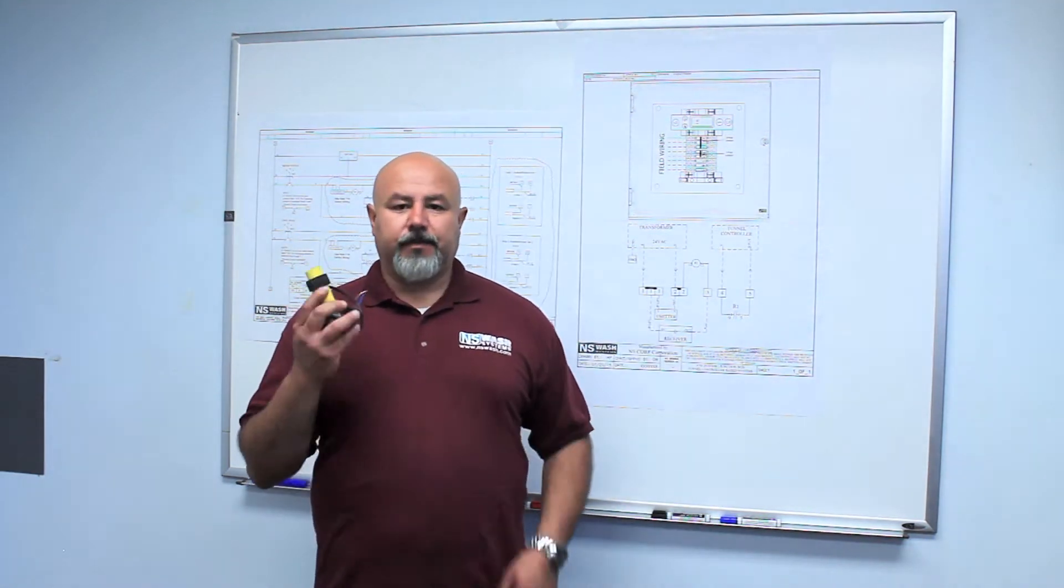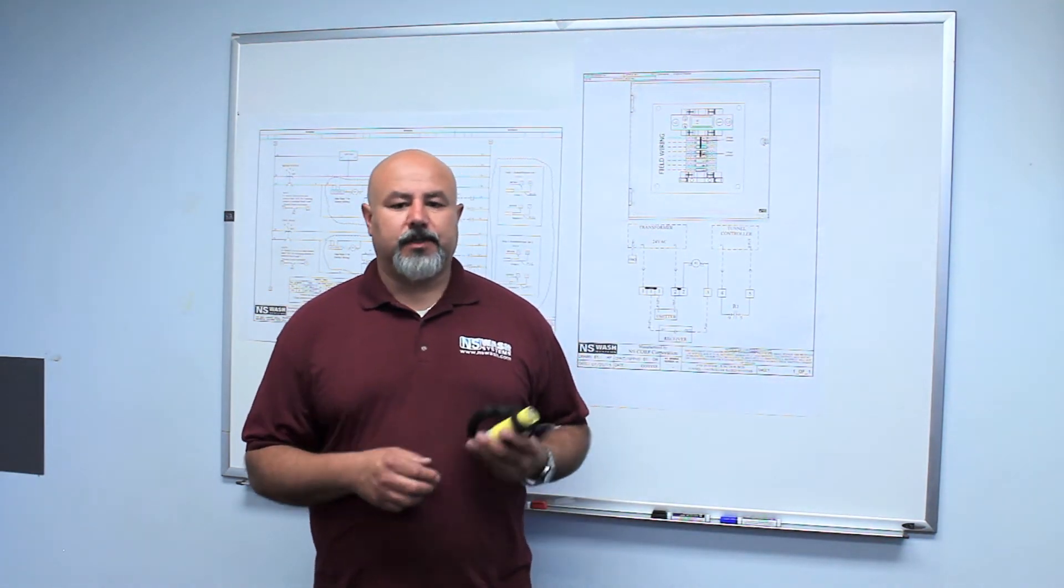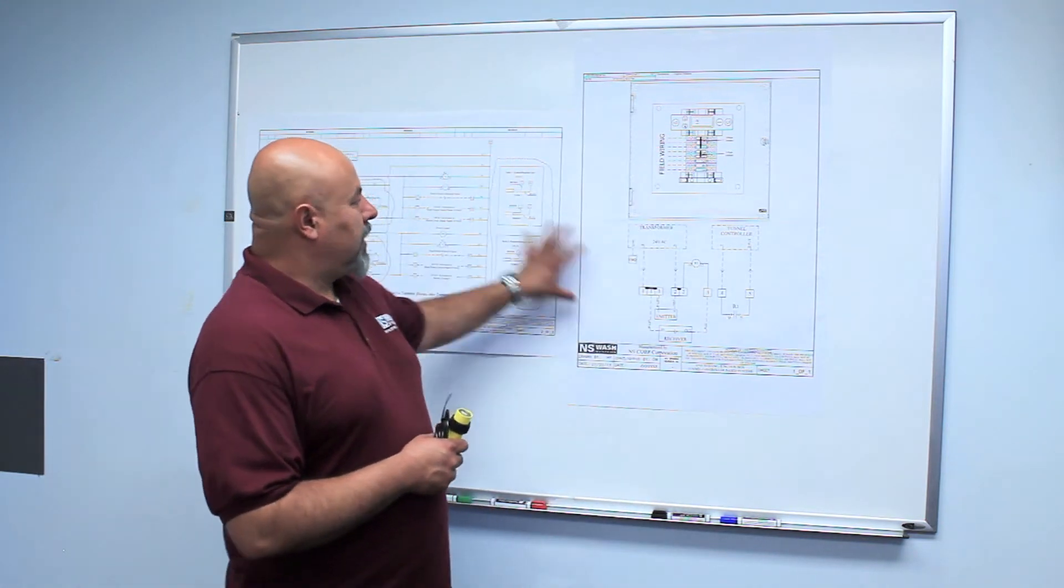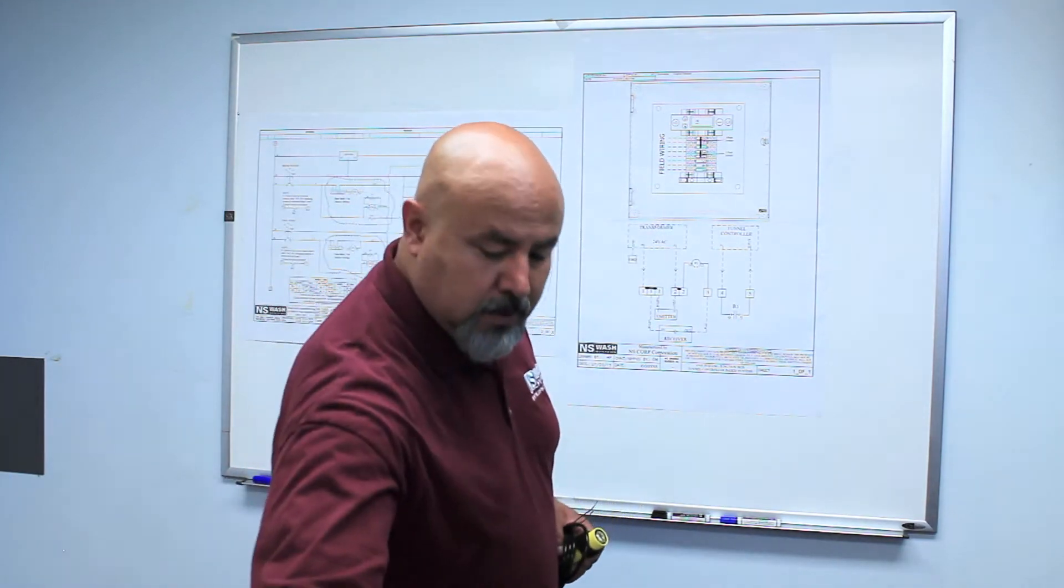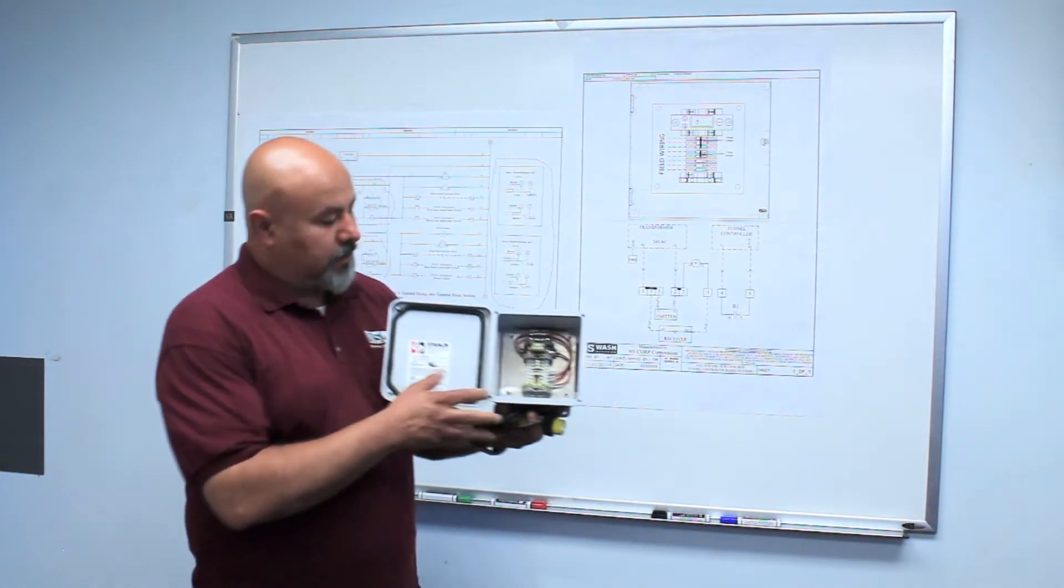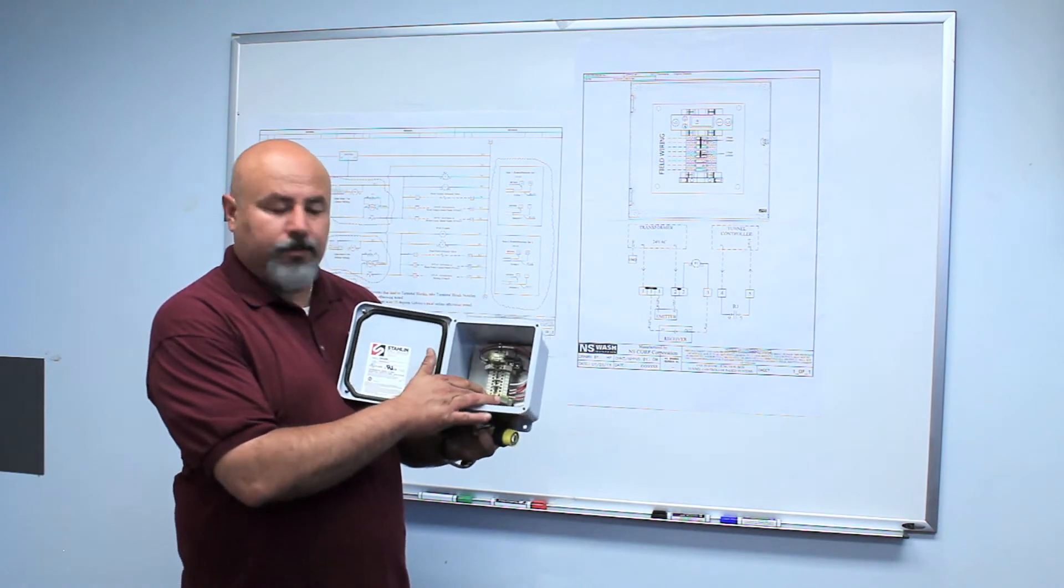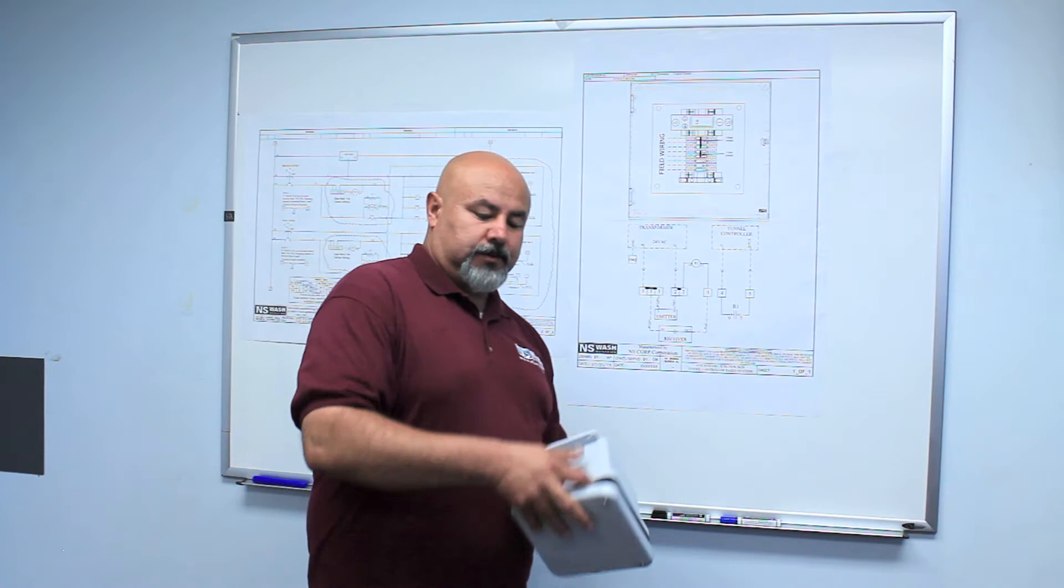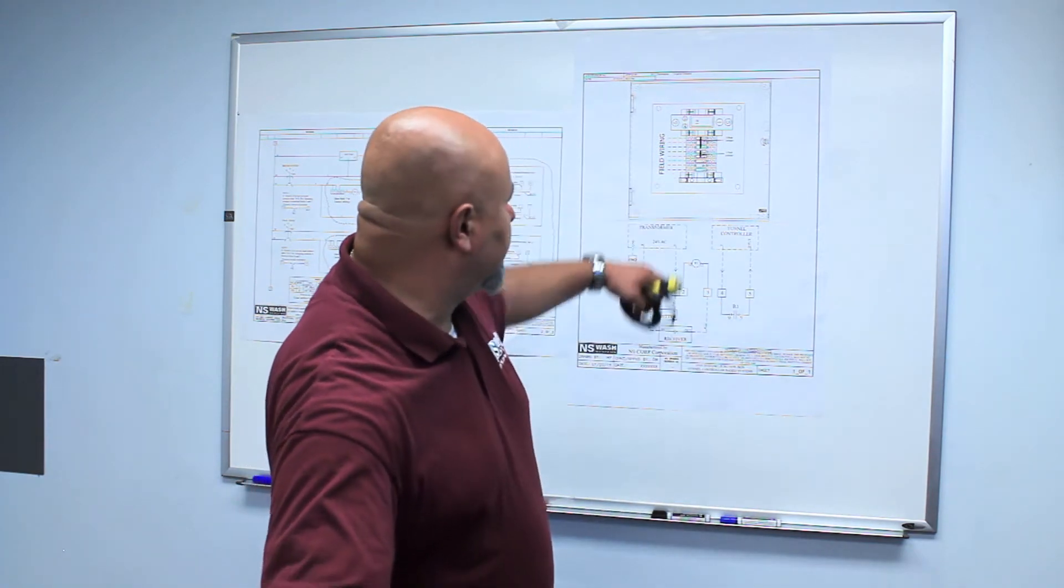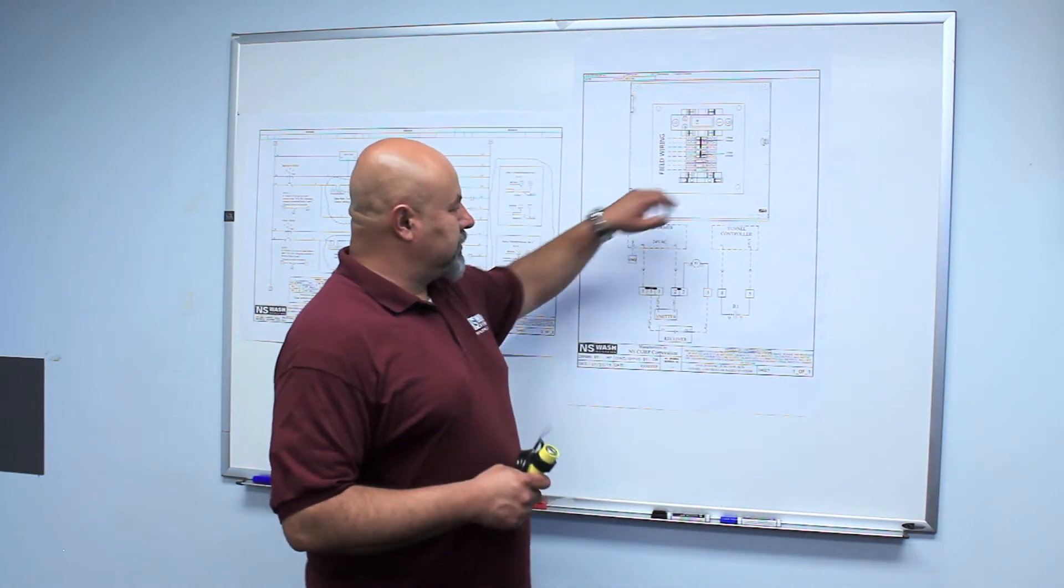Here's how to connect the emitter and receiver photo eyes into our control panels. First off, here we have some blown-up schematics. This is our small control panel box, which is this small box with a set of terminals and a relay. This box is this schematic that you see right here. Here's your components inside the box.